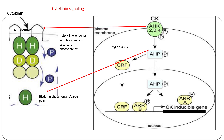Besides the type B ARR-regulated cytokinin responses, phosphorylated AHP can activate transcription factors called cytokinin response factors or CRFs by phosphorylating them. The phosphorylated CRFs then move to the nucleus and bring about transcriptional regulation of cytokinin response genes. The genes activated by type B ARRs and CRFs are mostly non-overlapping, suggesting two independent pathways of activation of cytokinin response genes.